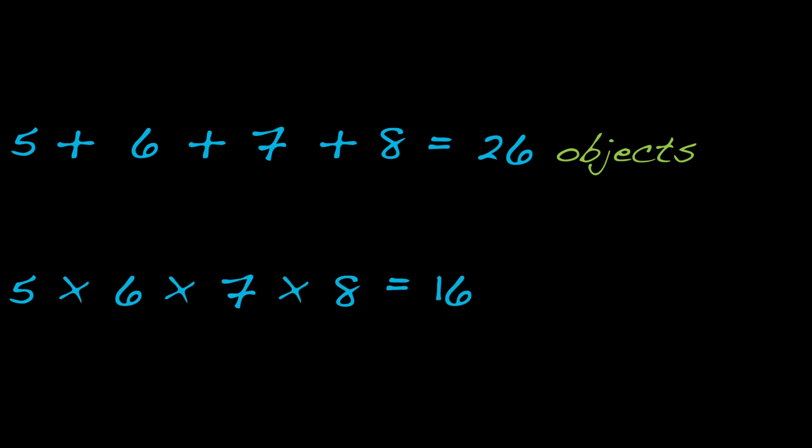And the number of combinations gets big fast. For instance, if we had 5 heads, 6 bodies, and 7 arms, and say, 8 different kinds of wheels on our robots, we would have to build 5 plus 6 plus 7 plus 8, or 26 different kinds of objects. But we could build 5 times 6 times 7 times 8, or 1680 different robots.